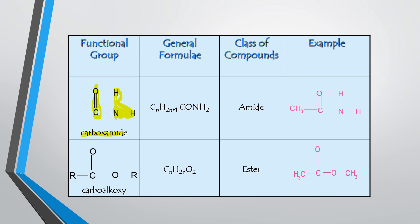The next functional group is carboalkoxy. Carboalkoxy means the functional group consists of C double bond O (carbo), an alkyl group, and oxygen (oxy). The general formula for carboalkoxy is CnH2nO2, and it belongs to the class of compound called ester.